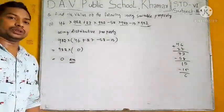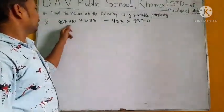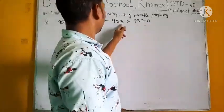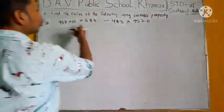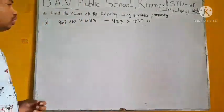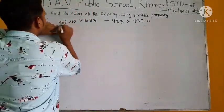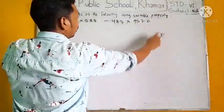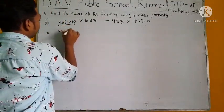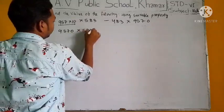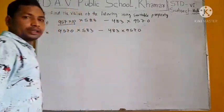Now we will discuss another question. Our next question is 957 into 10 into 583 minus 483 into 9570. Look at here, there is no common here. First check what is given here. If we multiply 10 with 957 we will get 9570. That is, if we multiply these we will get 9570 into 583 minus 483 into 9570.